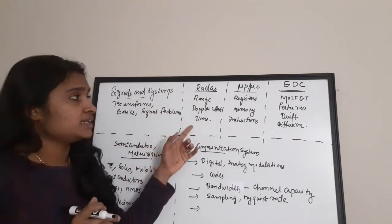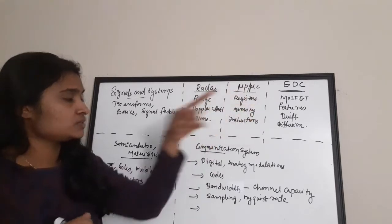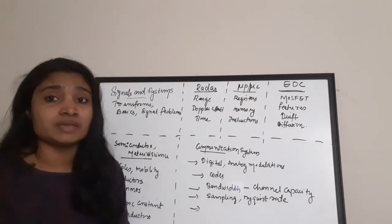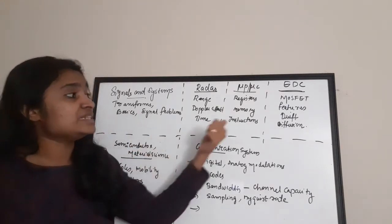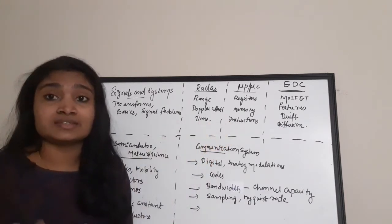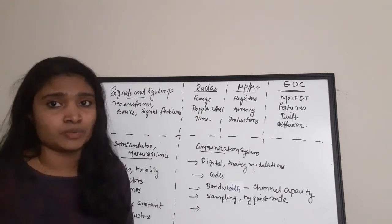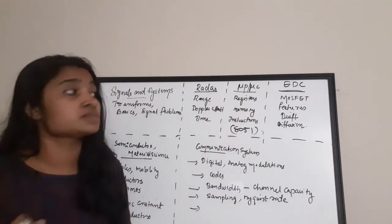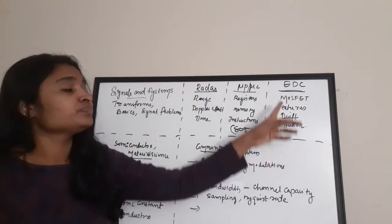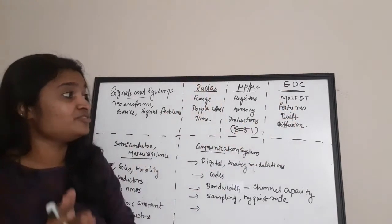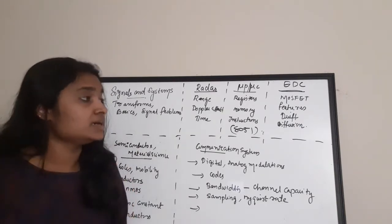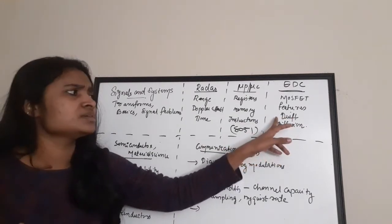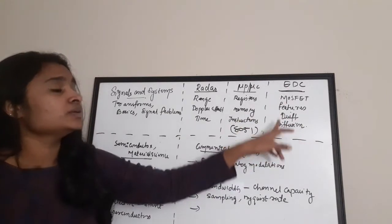For Microprocessor and Microcontroller, study the basic important registers, memory organization basics, and main instructions. The register areas are very important, especially for the 8051 — study the Special Function Registers. For EDC (Electronic Devices and Circuits), study the basic features of MOSFETs, and drift and diffusion phenomena — some questions can come from these areas.